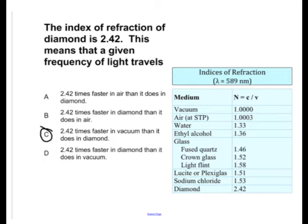For diamond, you get that velocity is equal to c over 2.42. So vacuum is 2.42 times faster than diamond. So 2.42 times faster in vacuum than it does in diamond is the correct answer.